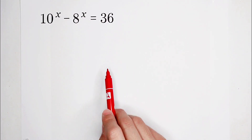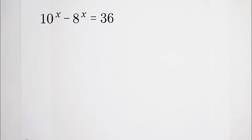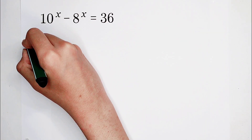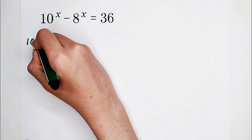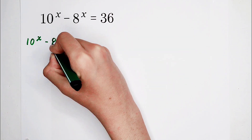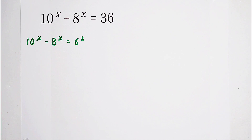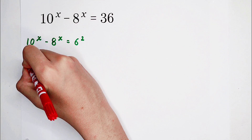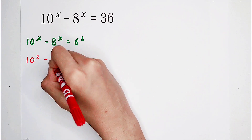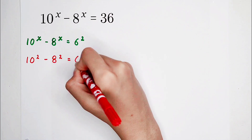So now, that means 10 to the power of x minus 8 to the power of x is equal to 6 squared. You noticed that 36 is 6 squared. Now, what have you found? I think most of you can find a solution: we all know that 10 squared minus 8 squared is equal to 6 squared.